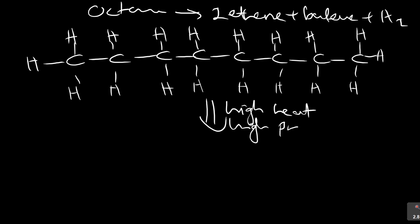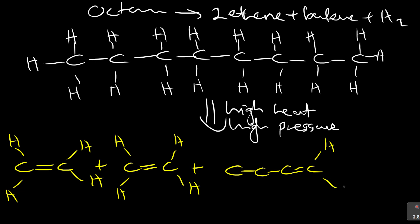What are you going to have? Two ethene molecules because at the end the equation must balance. This is the first ethene, plus another ethene because they say it is two of the ethene, plus butene with four carbons, plus hydrogen, which is H2.